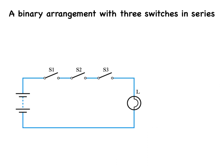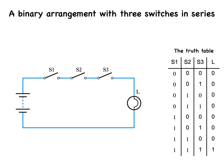Here is yet another binary arrangement with three switches in series, which generates this truth table. The three switches form what is known in logic gate terms as an AND gate. We state its logic in the equation: L equals S1 AND S2 AND S3.